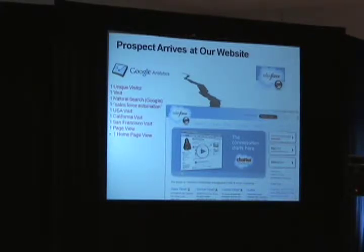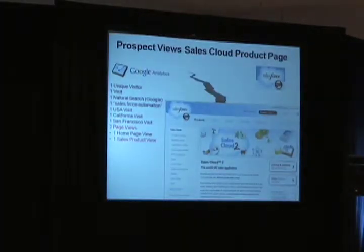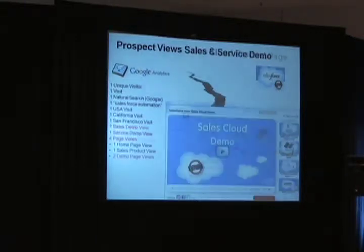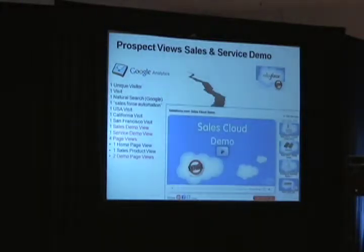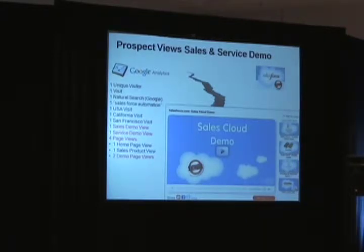Now this prospect clicks around and looks at a sales product view — he's looking at our product page for sales. Then this person goes out and starts looking at some demos on our website. He looked at a sales demo, he actually looked at a service demo, and he's been to our site and looked at a bunch of product pages.